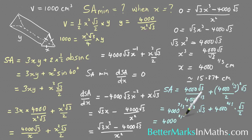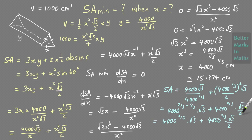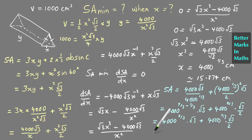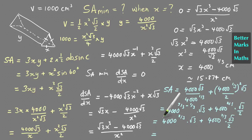The surface area equals 4000 to the two-thirds times root 3, plus 4000 to the two-thirds times root 3 over 2. Taking out the common factor of 4000 to the two-thirds times root 3, you have one plus one-half, which is one and a half, or three-halves. So the minimum surface area equals 3 over 2 times root 3 times 4000 to the two-thirds.